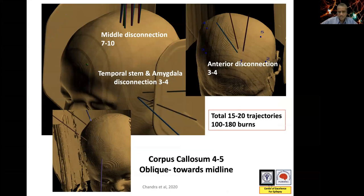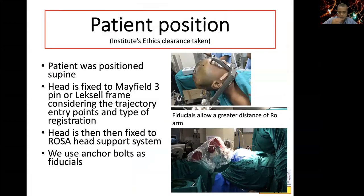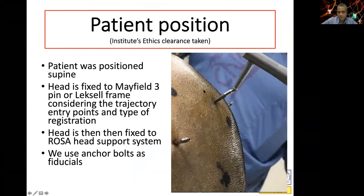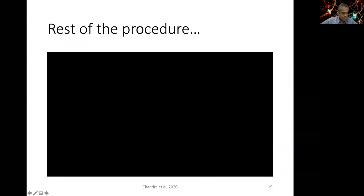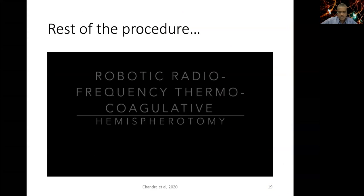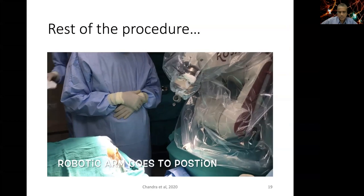The trajectories include: anterior disconnection (coronal), middle disconnection (parasagittal, 7 to 10 trajectories), posterior disconnection, and corpus callosum tackled by four paramedian-to-midline trajectories. The patient is positioned supine, head fixed to Mayfield or Alexis frame attached to the ROSA head support. We use anchor bolt fiducials for accuracy and to keep ROSA further away for adequate robotic arm movement. I'll show a four-minute surgical technique video — no audio except when checking impedance.